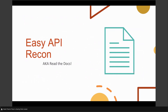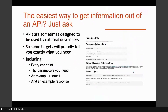Easy API recon: read the docs. The easiest way to get API information is just to ask. APIs are sometimes designed to be used by external developers — something like Twitter or Facebook will just have documentation written out for you. It says: here's the API endpoint, here's what it responds to, here's the content type, here's what it returns, here's the type of everything it returns, here's an explanation. For security testing this is gold. It includes every endpoint, the parameters you need, an example request, an example response — so you can compare what you get to what it should be.